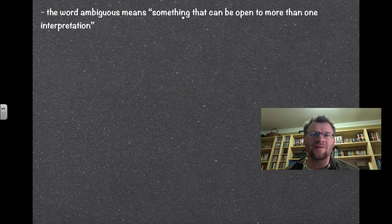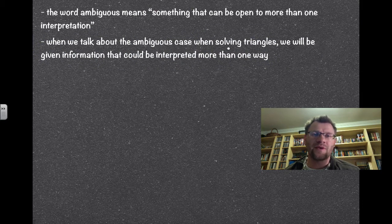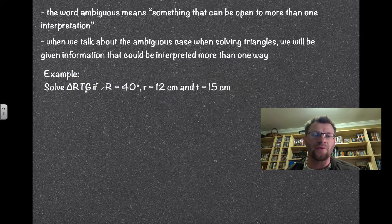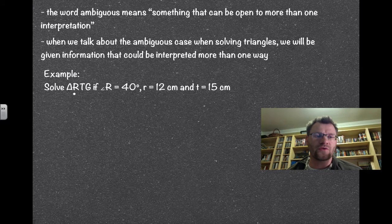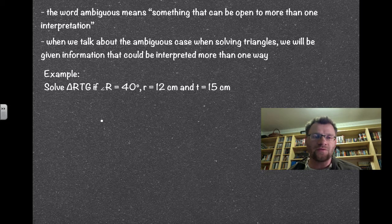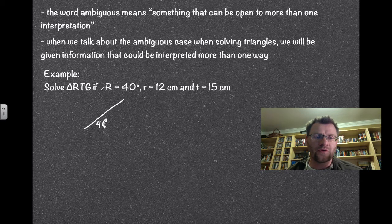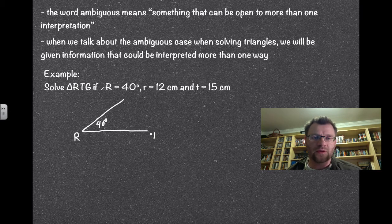The word ambiguous means something open to more than one interpretation. When we talk about the ambiguous case in solving triangles, we're given information that could be interpreted in more than one way. For example, we're asked to solve triangle RTG if angle R equals 40 degrees, side R equals 12, and side T equals 15. If I start to draw my triangle with a 40 degree angle in the bottom left, this would be angle R, with angle T over here.